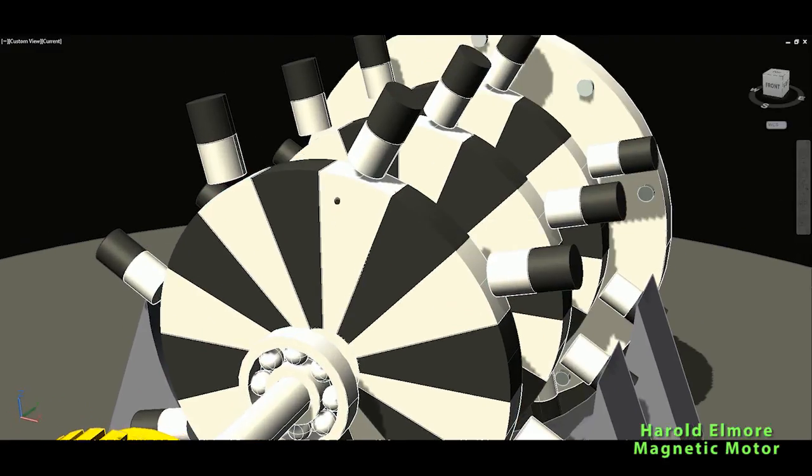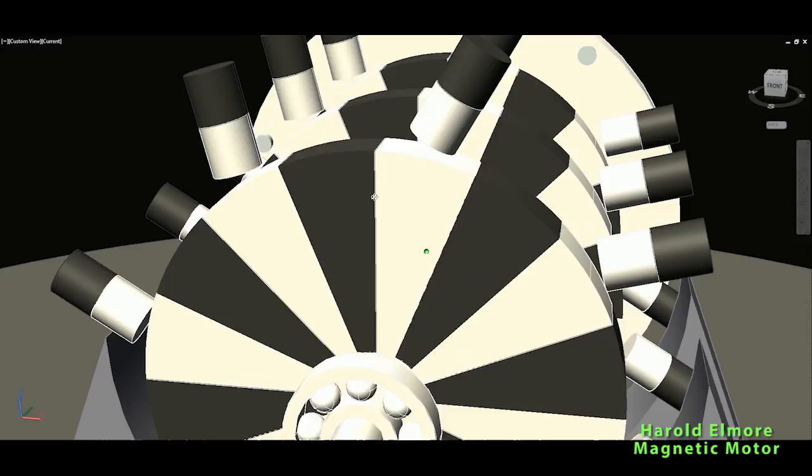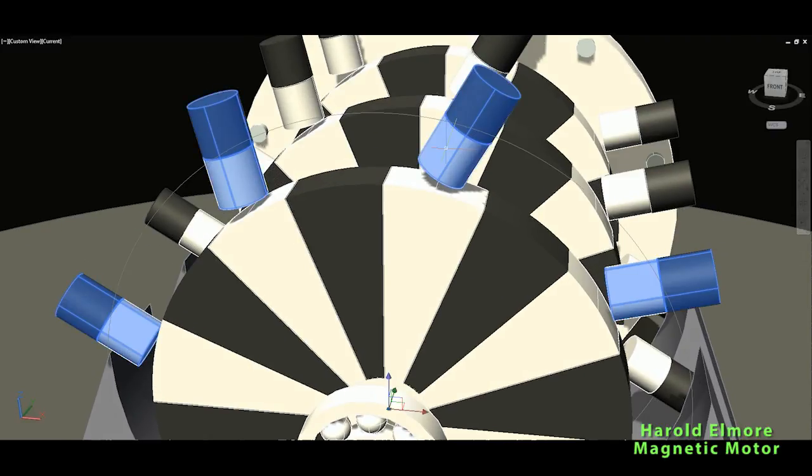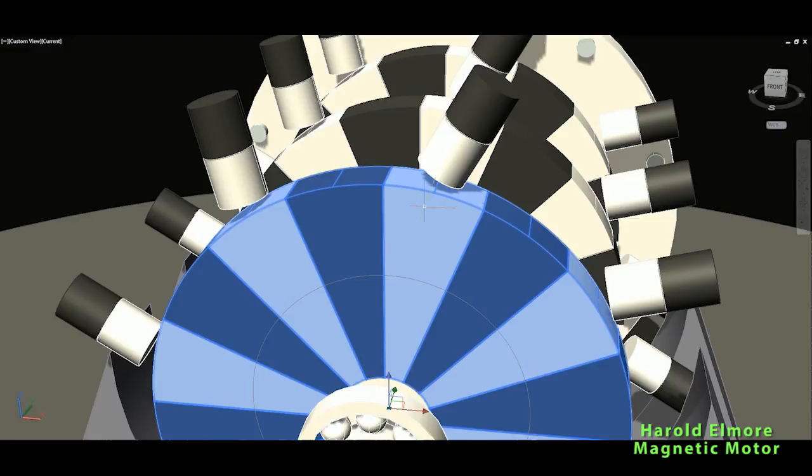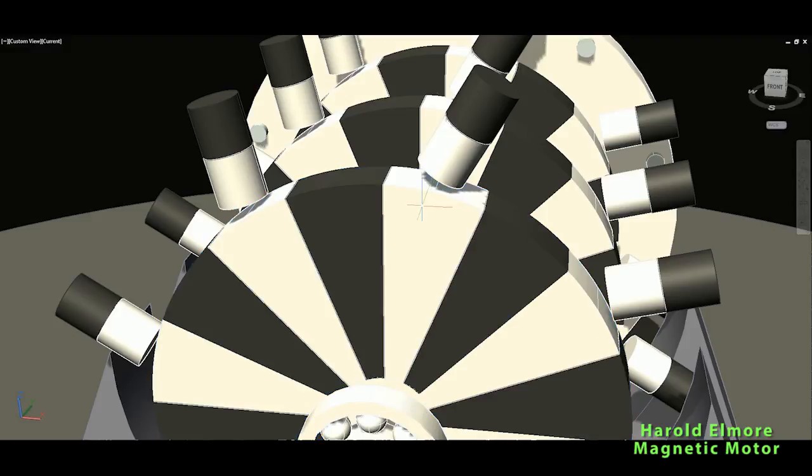So as I now written this, let's say gray magnets would be the North Pole. Gray in this magnets and gray on this rotor would be the like poles. So they will repel each other.